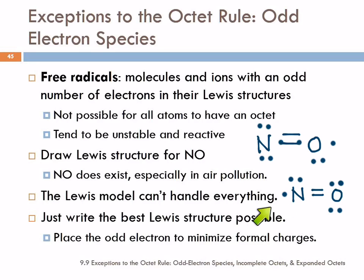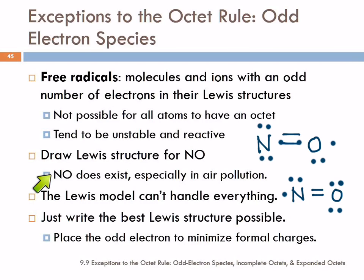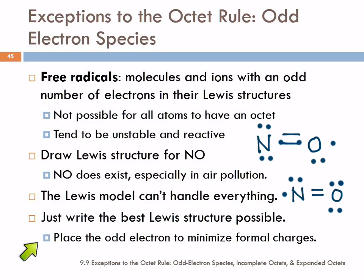We really can't do any better than that. Because the Lewis model just can't handle this — and nitrogen monoxide does exist, it's a component of air pollution. So we're just going to do our best. It's not going to be perfect, but we'll do our best. We want to place that odd electron so that we minimize formal charges.